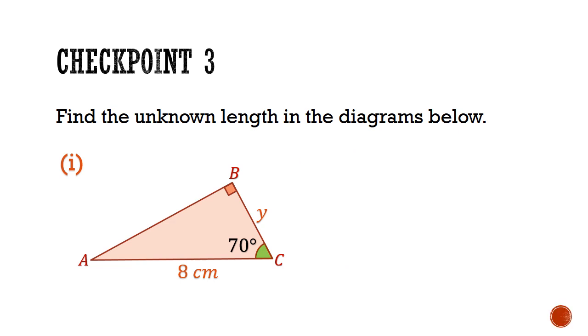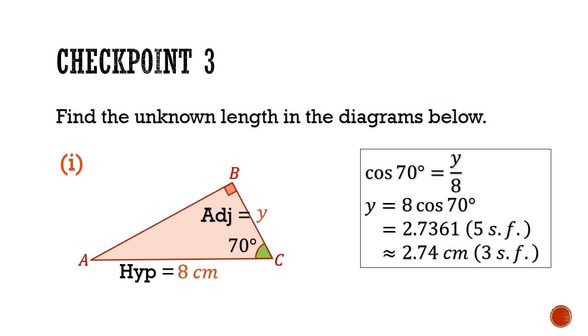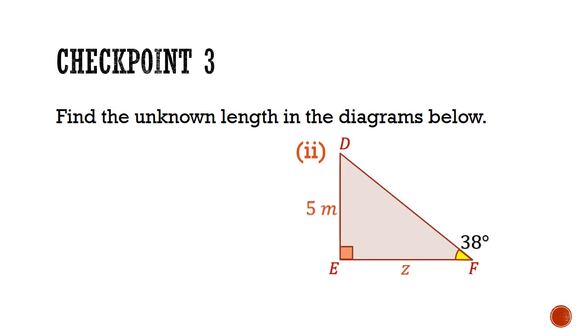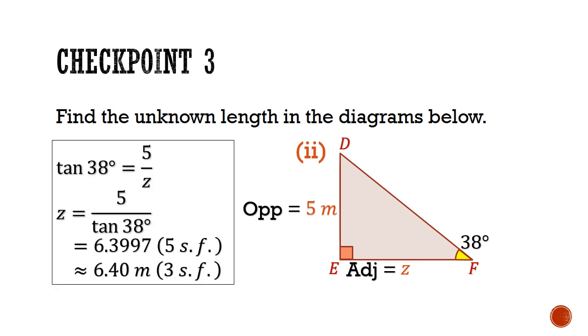Now for the answers. For part 1, we have a known hypotenuse of 8cm and an unknown adjacent labeled y. The only trig ratio involving adjacent and hypotenuse is the cosine ratio. So cosine of the reference angle 70 degrees is equal to y over 8, and we can solve this to get y equals to 2.74cm. Similarly, for part 2, the opposite is 5 meters and the adjacent is the unknown z. If we were to use the tangent ratio, tangent 38 degrees will be equal to opposite 5 meters divided by the adjacent of z. z will be equal to 5 divided by tangent 38, and that gives us 6.40 meters.